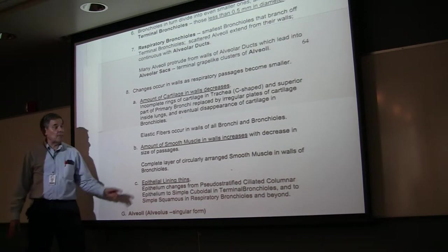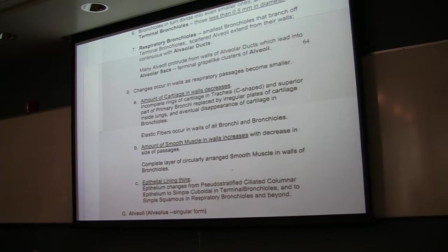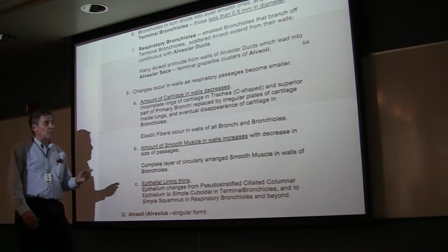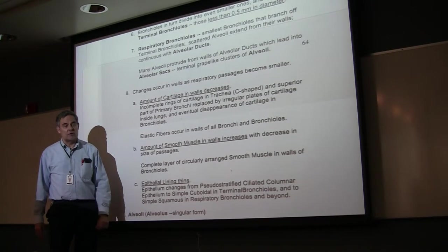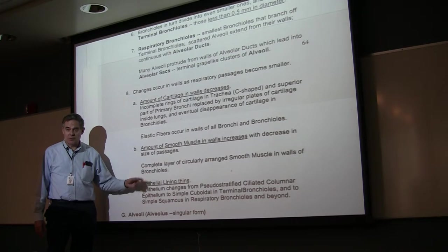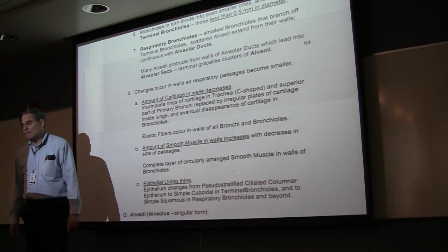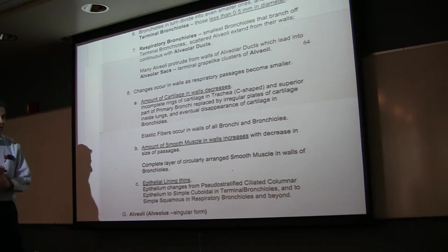Another thing is the amount of smooth muscle in the walls actually increases as you go from larger to smaller, which means the smaller passageways are capable of changing their shape more than the larger ones, because of contraction of the smooth muscle in their walls. You get vasodilation when they relax, vasoconstriction when they contract.